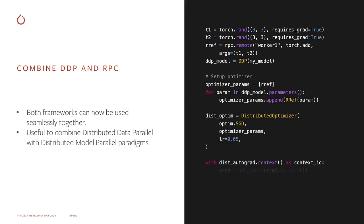I'd also like to talk about combining DDP and RPC. The RPC framework can be used for distributed model parallelism, and DDP is used for distributed data parallelism. We can now combine both frameworks together for more complicated training paradigms. As shown in this example, we have a model wrapped in DDP — so that model is replicated — and then we have some remote parameters on worker one. To train this model, you set up your distributed optimizer, retrieve the remote reference via RPC in your forward pass, feed that into DDP, compute the loss, then run your backward and optimizer step. This aggregates gradients across all replicas and also updates the remote parameters' gradients and runs the optimizer remotely.